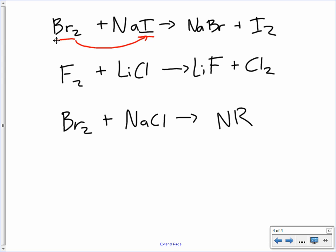So, this is called non-metal replacement. So, in the first one, we have bromine replacing iodine. Second one, we have fluorine replacing chlorine. In the last one, we have bromine not replacing chlorine. That one didn't happen. So, what we want to talk about is, what's the difference in those three? Why did the last one not happen?